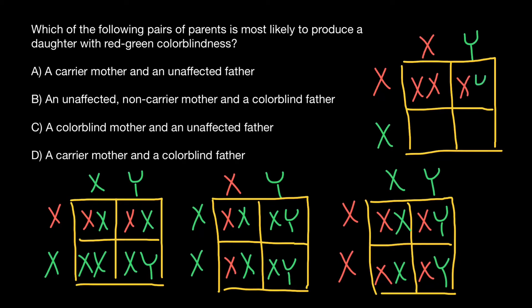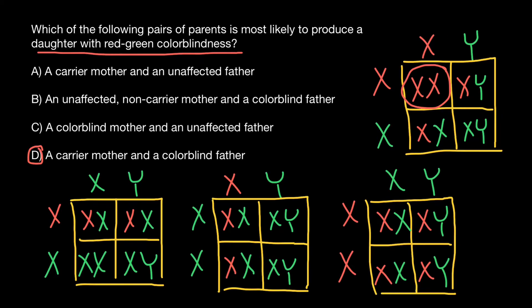The defective X chromosome from the father's side pairs with a normal X chromosome from the mother's side. As you can see, 50% of the daughters in this family are going to be affected with this genetic disorder. The correct answer is D. Only variant D — this cross would produce 50% of daughters affected with this genetic disorder, and none of the rest.